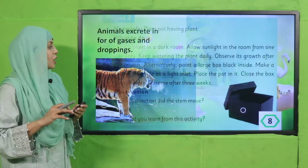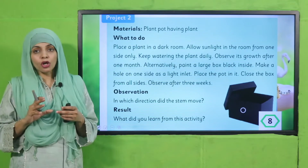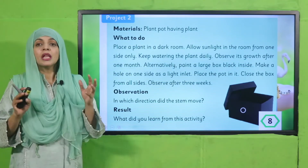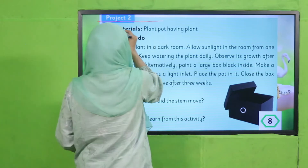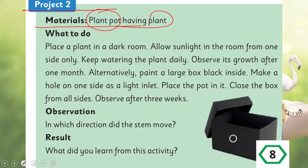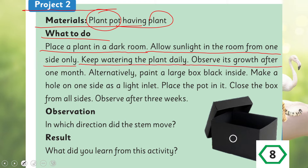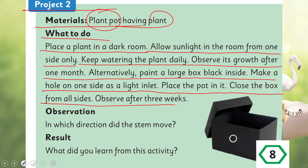Now let's move forward towards a project. First watch how I perform it, then collect all the required materials and perform it with your classmates and teacher. Materials needed: a plant pot with a plant. Place the plant in a dark room, allow sunlight from one side only, keep watering the plant daily, and observe its growth for one month. Alternatively, paint a large box black inside, make a hole on one side as a light inlet, place the pot inside, close the box from all sides, and observe after three weeks.